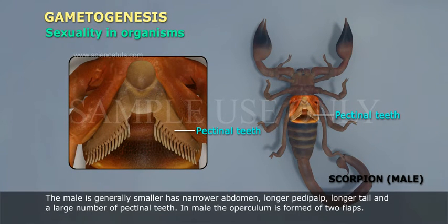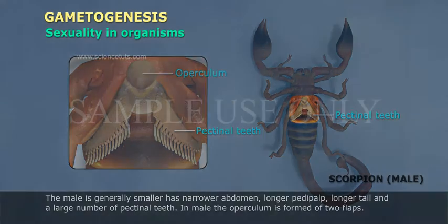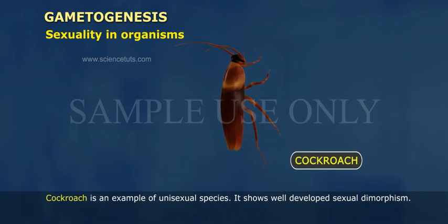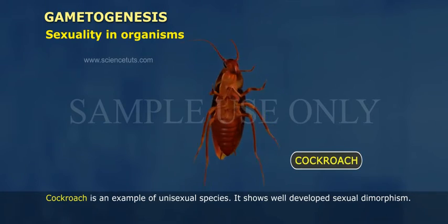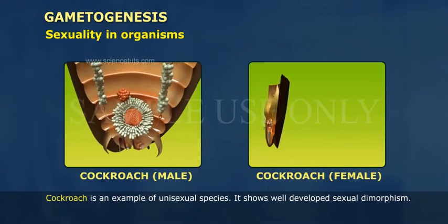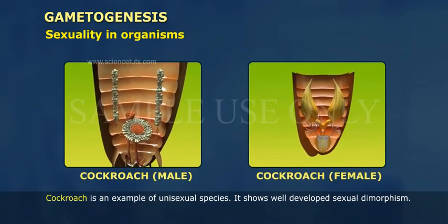In the male, the operculum is formed of two flaps. The female is bigger, having broader abdomen. Cockroach is an example of a unisexual species and it shows well-developed sexual dimorphism.